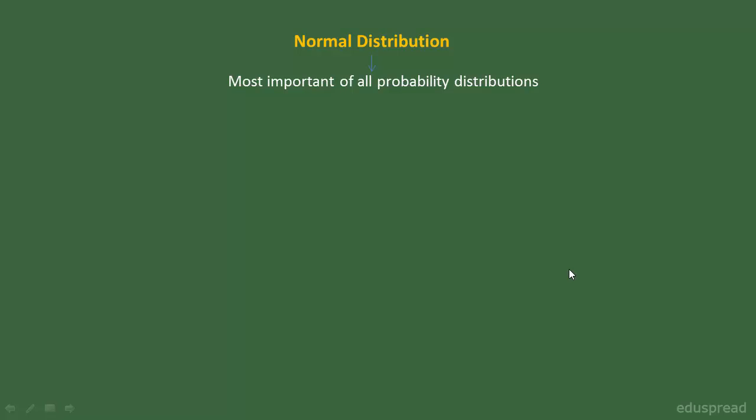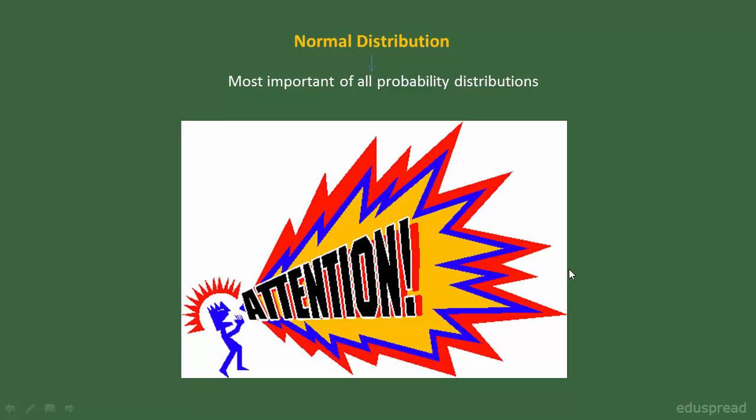In this lecture we will discuss normal distribution. Normal distribution is the most important of all probability distributions because of the role that it plays in statistical inference. So pay attention.